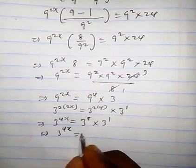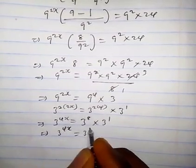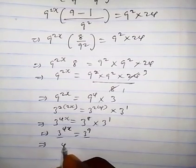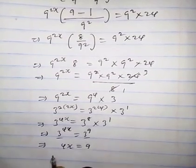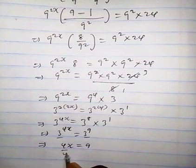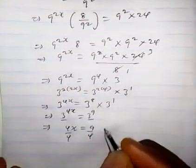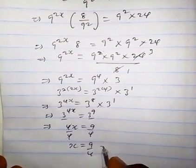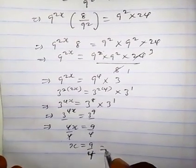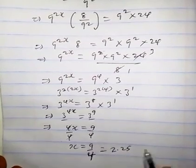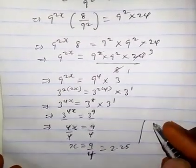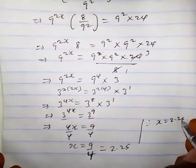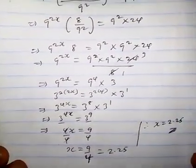Since the base is the same, we have 4s equals 9. Dividing through by 4, so 4 cancels 4, we have s equals 9 over 4, which is 2.25. Therefore s is simply 2.25. Thanks for watching — consider subscribing.